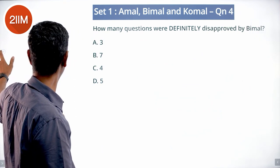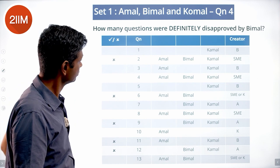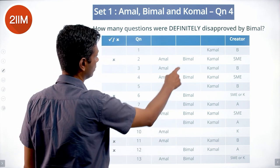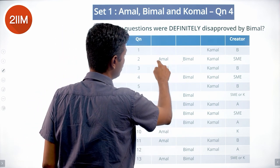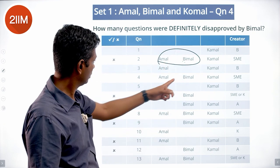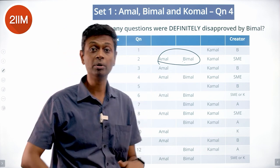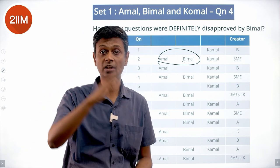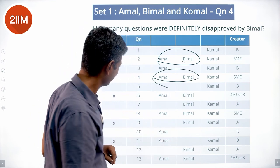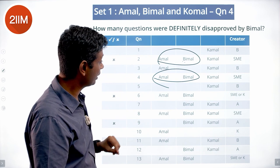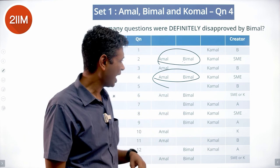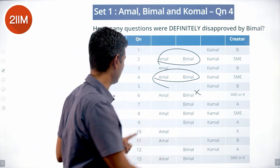How many questions were definitely disapproved by Bimal? For questions with ambiguity between Amal and Bimal approving/disapproving, we can't be sure. But for Q6, which was rejected: whether created by an SME or Komal, both Amal and Bimal must have rejected it — so Bimal definitely rejected Q6.